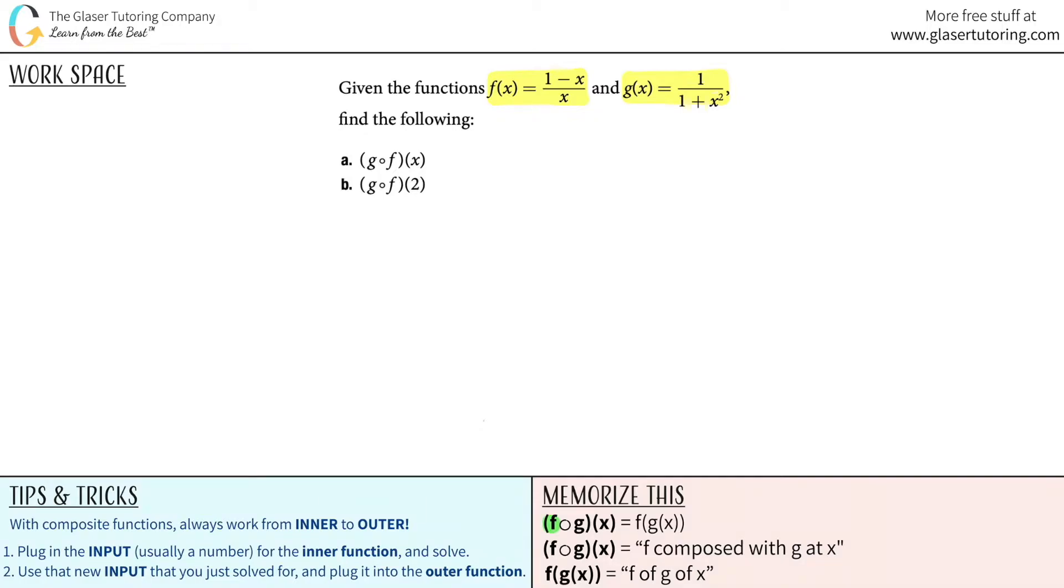So just know that the first letter that they give you is the outer function of the composite function and the second letter that they give you is the inner function. Okay, so placement matters here.